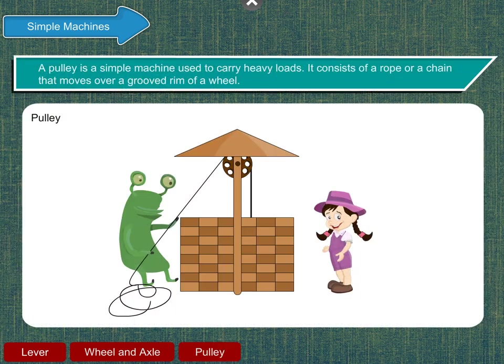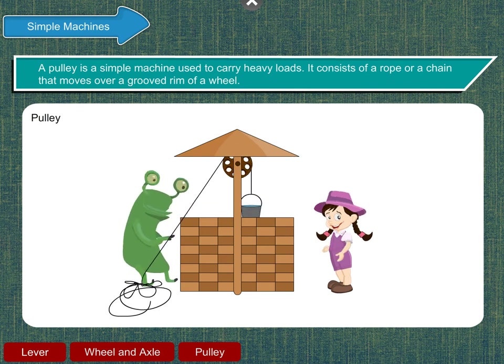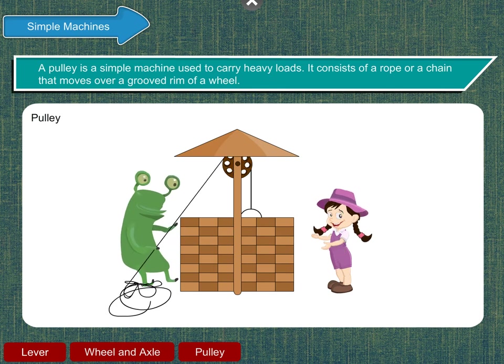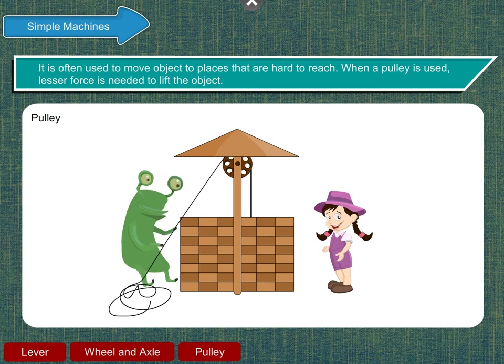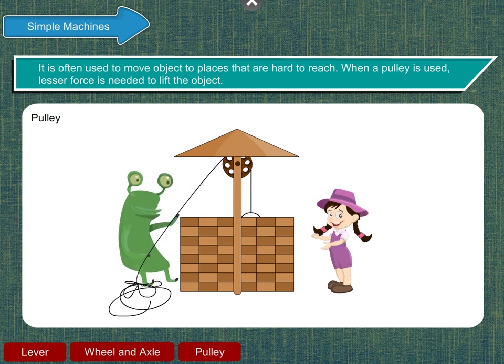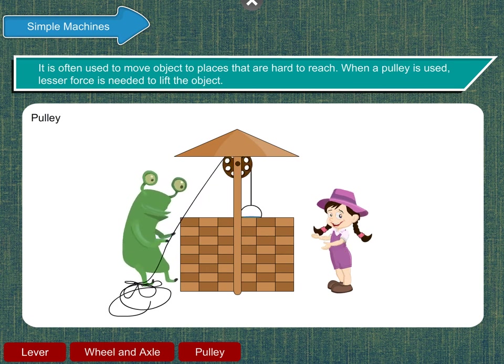A pulley is a simple machine used to carry heavy loads. It consists of a rope or a chain that moves over a grooved rim of a wheel. It is often used to move objects to places that are hard to reach. When a pulley is used, lesser force is needed to lift the object.